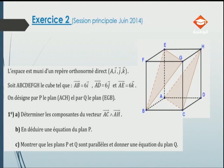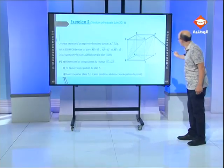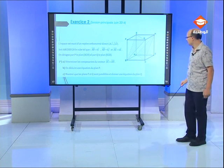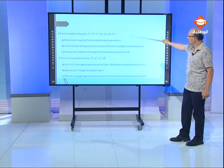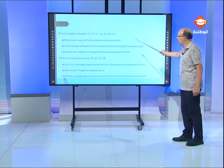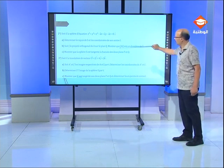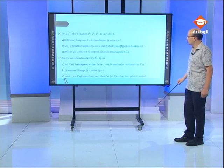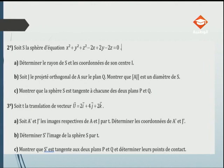L'espace est muni d'un repère orthonormé direct A, I, J, K. On a un cube ABCDEFGH tel que AB = 6I, AD = 6J, AE = 6K. On va étudier la position entre les plans EBG et AHC dans la première partie. Dans la deuxième partie, on étudiera l'équation d'une sphère et la position relative entre la sphère et les deux plans P et Q, puis l'image d'une sphère et l'intersection de la sphère avec les plans P et Q.